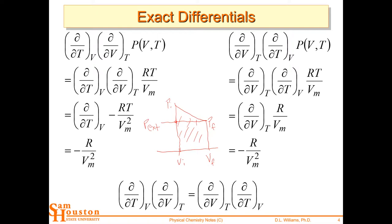The energy from the initial point to the final point is path independent — we take the initial and final variables and get the same energy regardless of path. The things that are different are the ratio of work and heat. In one case you get more work out and less heat; in the other, more heat and less work. But the delta-E or delta-U is the same.